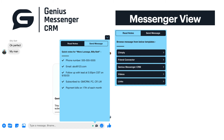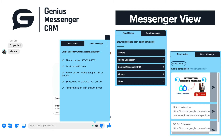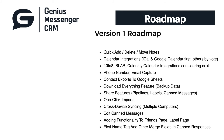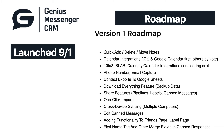Here are your canned responses, nicely categorized in whatever top category you select. In the next update, you'll be able to edit, add, and delete these as well from this panel. On the roadmap, here's what we consider version one — we're about 85% there after this next update. The only things we're really missing are the calendar integrations and cross-device syncing, but every other option on the roadmap is going to be in the next update.